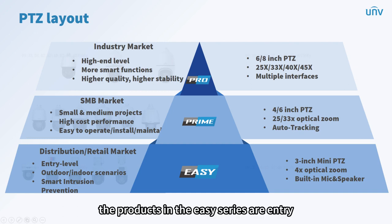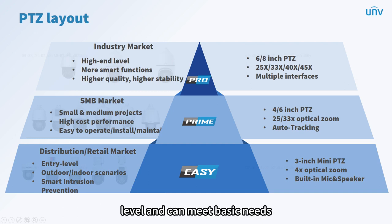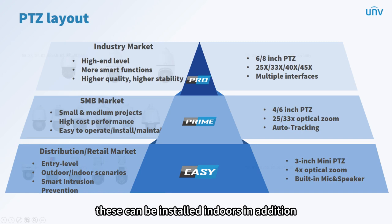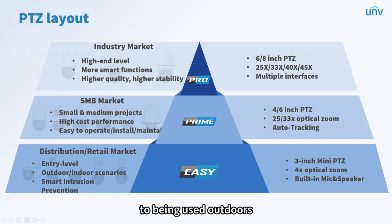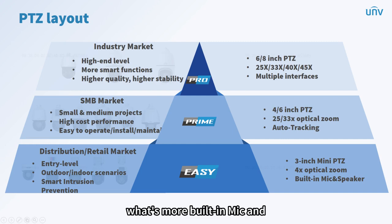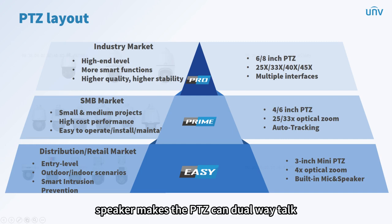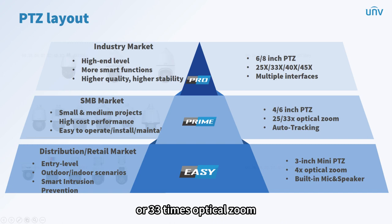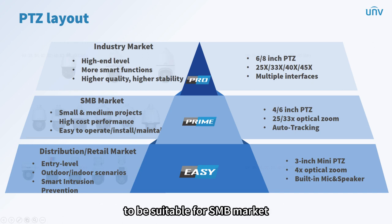The products in the Easy series are entry-level and can meet basic needs. They are all 3-inch with 4x optical zoom, and because of their small sizes, they can be installed indoors in addition to outdoors, making them highly adaptable to various scenarios. The built-in mic and speaker enables dual-way talk, avoiding the cost of installing additional audio and alarm equipment. The Prime series PTZ cameras are 4 or 6-inch, supporting 25 or 33x optical zoom, thus can see further, with better performance suitable for the SMB market.